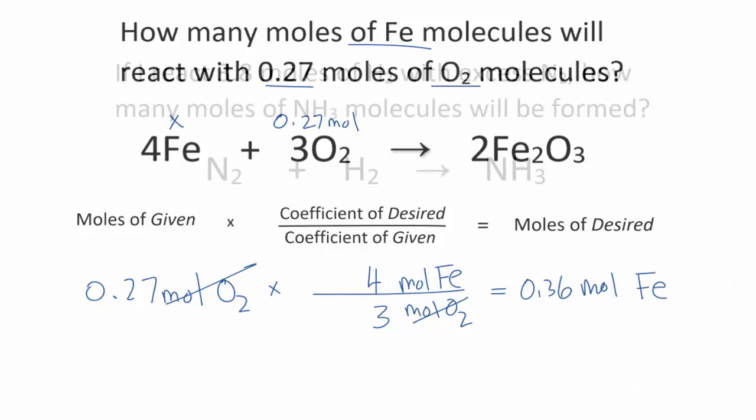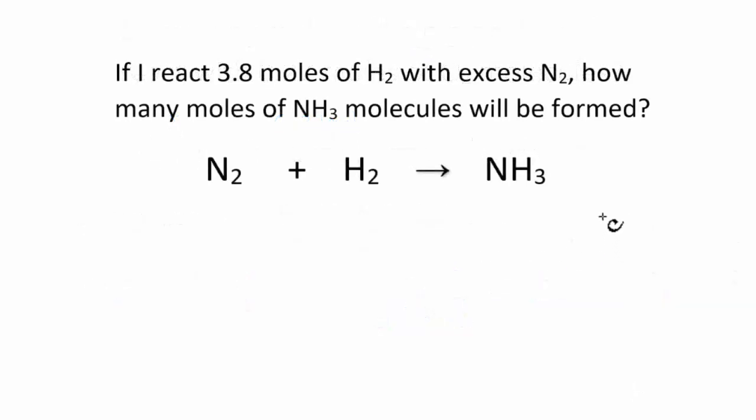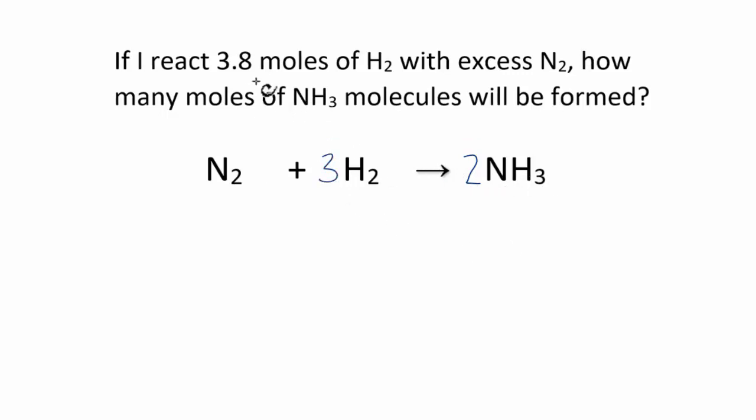Let's try one more. So in this problem, we see that the equation, it's not balanced. So we do need to balance the equation first. If we put a 2 here, that would give us 2 nitrogens. We'd have 2 times 3, 6 hydrogens, but we could put a 3 here. And now it's balanced. So we have 3.8 moles of H2. And it says we have excess N2. That just means we have a lot of N2, this nitrogen gas, and we don't need to worry about it. And we want to know how many moles of NH3. That's the one we don't know, the ammonia.